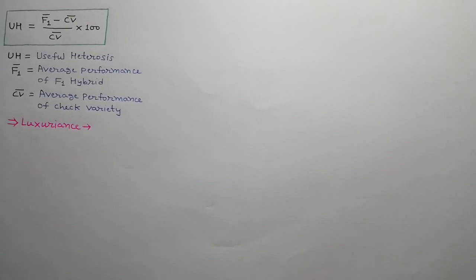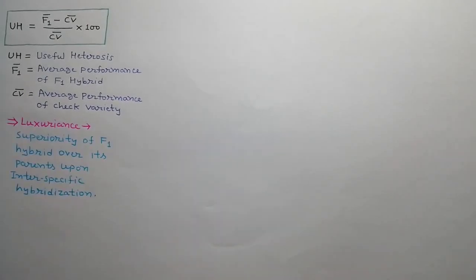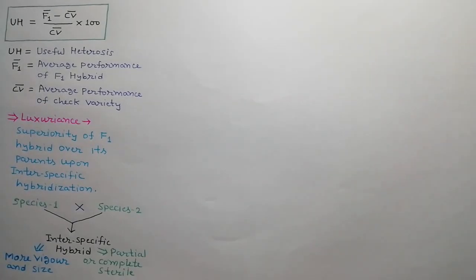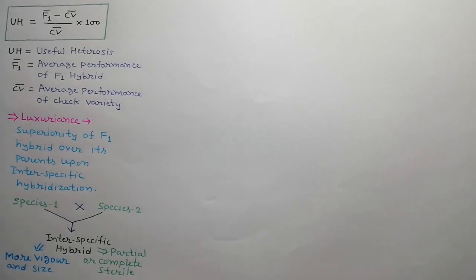Now, what is luxuriance? Luxuriance is the superiority of an F1 hybrid over its parents upon inter-specific hybridization. The F1 hybrid shows more vigour and size as compared to its parents. As shown in the diagram, species 1 is crossed with species 2 to produce an inter-specific hybrid. This inter-specific hybrid shows more vigour and size but is partially or completely sterile.